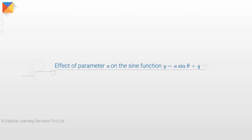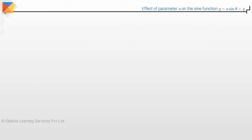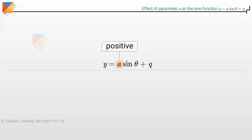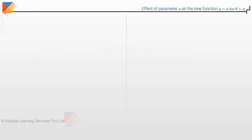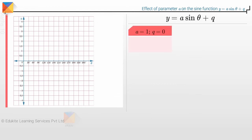Effect of parameter a on the sine function y equals a sine theta plus q. Let us investigate the effect on the function y equals a sine theta plus q of varying a. If a is positive, let us begin with a equals 1, q equals 0. The function becomes y equals sine theta, which we saw earlier. The graph of the sine function is shown.